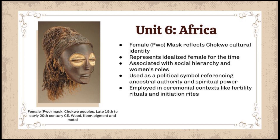In unit six of Africa, we have the female pole mask. It is deeply rooted within the Chokwe people and is a representation of their cultural identity, as it depicts the idealized female for that time. The mask was also an example of the social hierarchy associated with women's roles and identities set by society as caretakers, mediators, and guardians of tradition. It was also used as a political symbol, referencing ancestral authority and spiritual power, and was used in ceremonial contexts like fertility rituals and initiation rites.